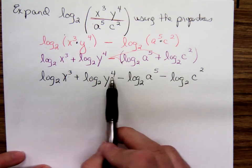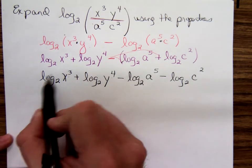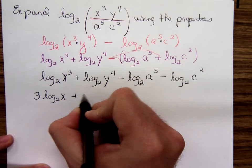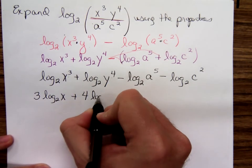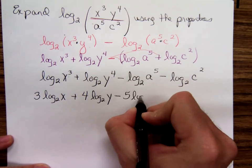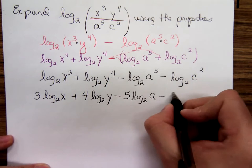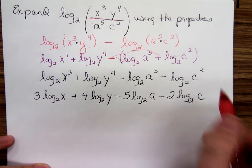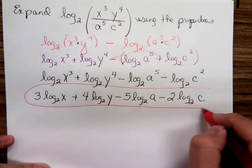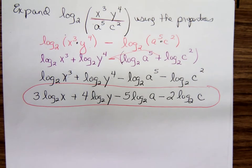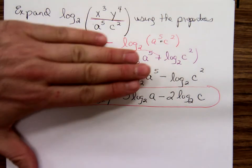Now using the power rule, carry down those exponents. So we get: 3 log base 2 of x plus 4 log base 2 of y minus 5 log base 2 of a minus 2 log base 2 of c. Look at this long enough and you can figure out how to skip those three intermediate lines.